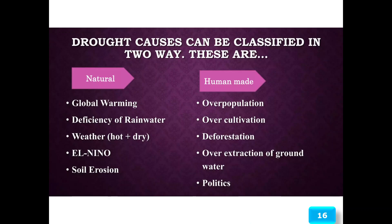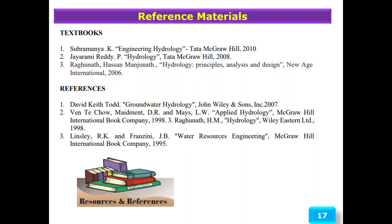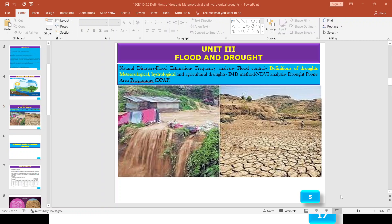Natural causes include global warming, deficiency of rainwater, and weather like hot and dry spells, and poor soil aeration. Human-made causes include population growth, over-cultivation, deforestation, over-extraction of groundwater, and poor land use policies. These are the reference materials for this topic. Thank you.